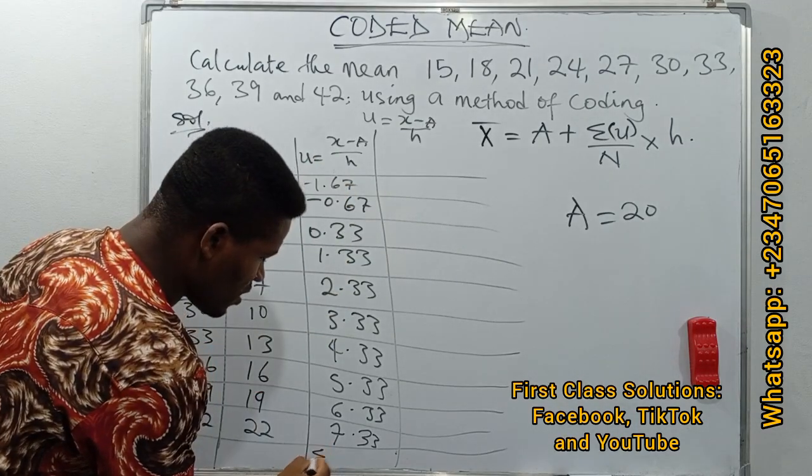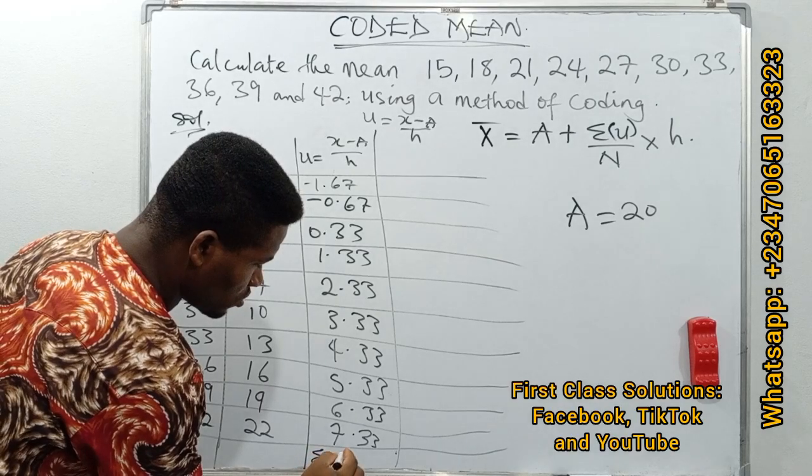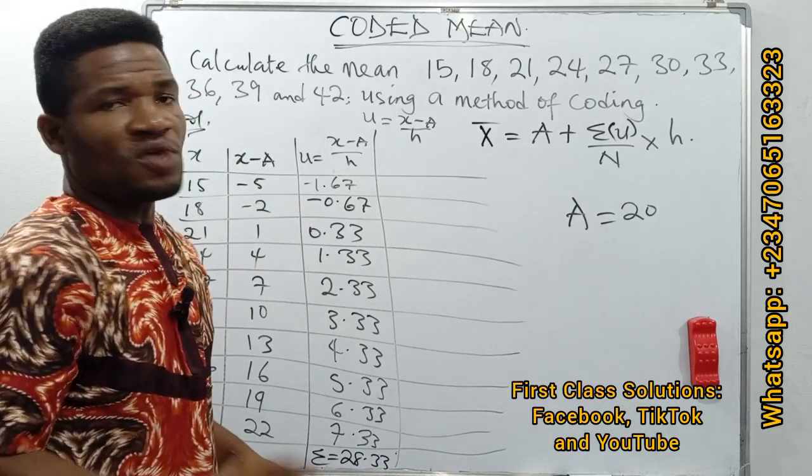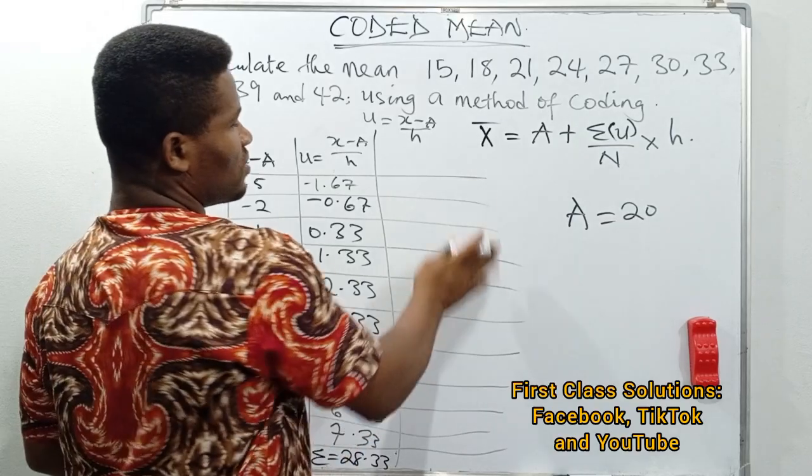The sum here is equal to 28.33. So if you have it as 28.33, therefore—